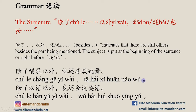When this structure means 'besides,' it is used with 还 or 也. Example: 除了唱歌以外，她还喜欢跳舞。 Another example: 除了汉语以外，我还会说英语。 英语 means 'English.' The sentence means: 'Besides Chinese, I can also speak English.'